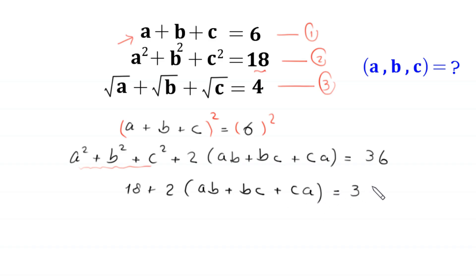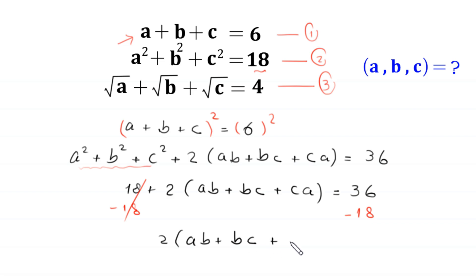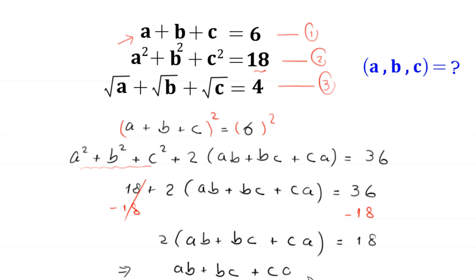We subtract 18 from both sides, leaving 2 times (ab + bc + ca) = 18. Dividing both sides by 2, this implies ab plus bc plus ca equals 9. Let's call this equation 4.